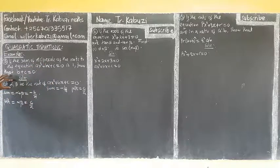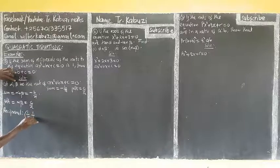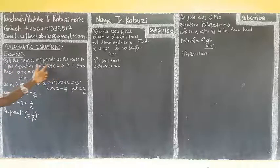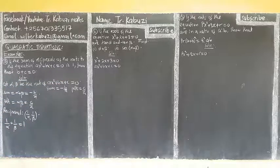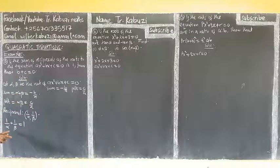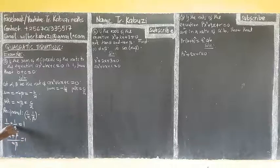Now we need to understand the sum of the reciprocals. The reciprocal of alpha is one over alpha, and for beta it is one over beta. The sum of the reciprocals is one, so one over alpha plus one over beta equals one. We cross-multiply to get alpha plus beta over alpha times beta equals one.